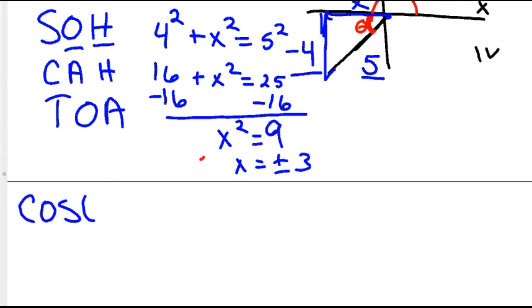So cosine theta would be adjacent over hypotenuse, which would be negative three over five. Tangent theta is opposite over adjacent, which is negative four over negative three, which two negatives makes that positive. So that would be four-thirds.